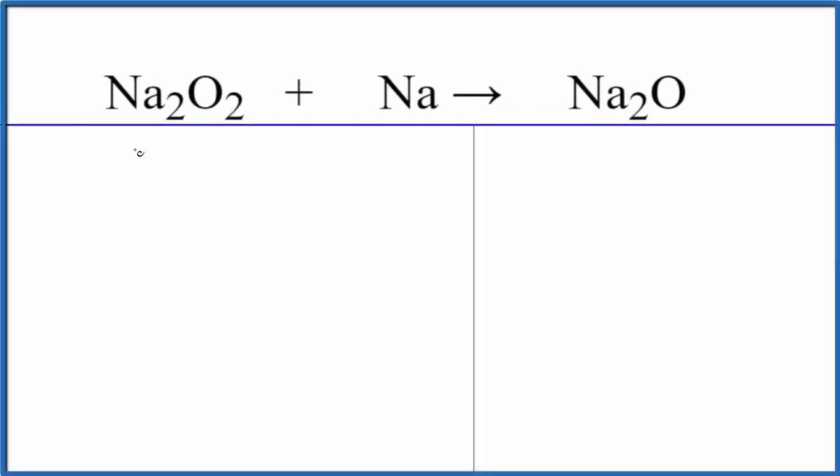In this video, we'll balance the equation for Na2O2 plus Na. This is sodium peroxide. This is solid sodium, it's a metal. And then we get sodium oxide as our product.